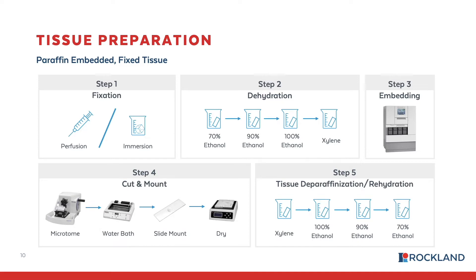After that point the tissue should be well dehydrated and you can move to embedding the tissue into molten paraffin wax, which is normally done with a paraffin embedder instrument. It heats the paraffin to a temperature where it is liquid, and after you remove the heat the wax will begin to harden, embedding your tissue within the wax. This provides support when you're slicing your tissue samples.